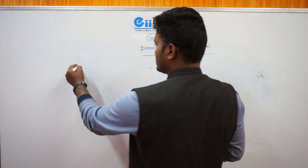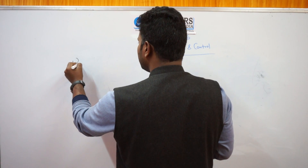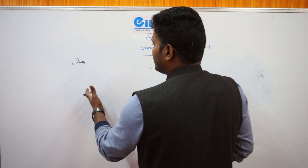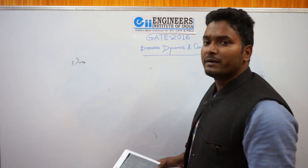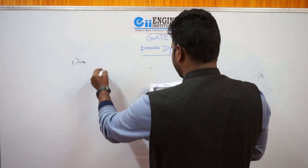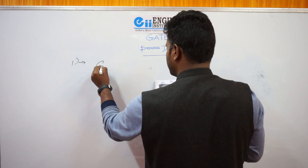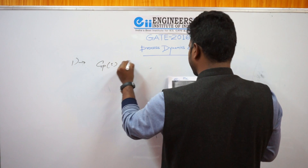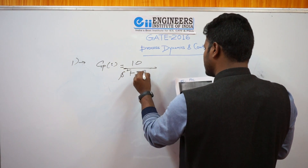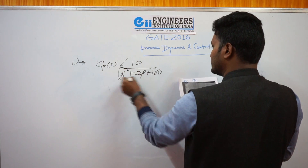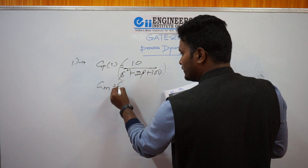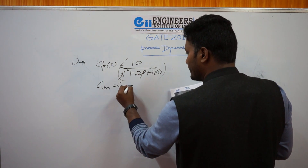The first question is based on the open loop transfer function and the Routh stability criteria. In the problem they have given the process transfer function GP(s) equal to 10 upon the second order transfer function s squared plus 2s plus 100. They have also given the transfer function of the measuring element and the transfer function of the final control element.